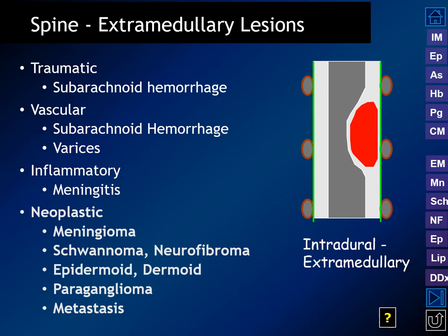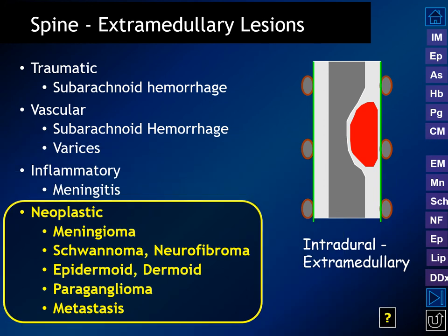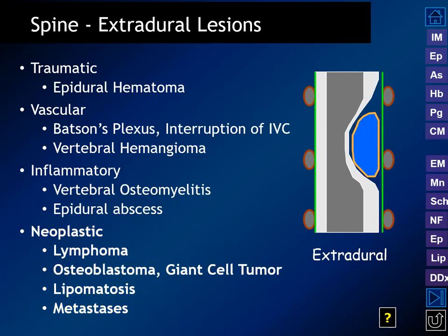Extramedullary lesions include subarachnoid hemorrhage and epidural and subdural hemorrhages from trauma. Vascular lesions may cause subarachnoid hemorrhage, and dilated vessels from a fistula causing varices. In the intradural extramedullary location we have meningioma, schwannoma, neurofibroma, epidermoid and dermoid inclusion cysts, paraganglioma, and metastatic disease. Extradural lesions include epidural hematoma, enlargement of Batson's plexus, vertebral body hemangiomas, osteomyelitis, epidural abscess, lymphoma, osteoblastoma, giant cell tumor, lipomatosis, and metastatic disease to the bony spine.